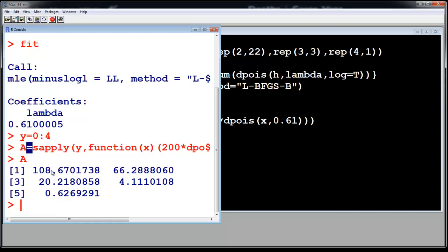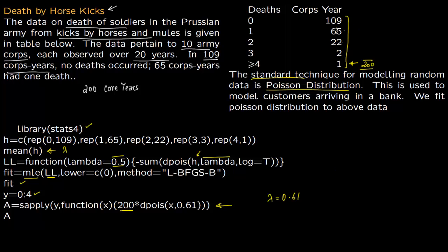Now let us see what observations we get. We get 108.6, 66.2, 20.2, 4.11, and 0.6. These are the observations from our theoretical calculation of lambda.